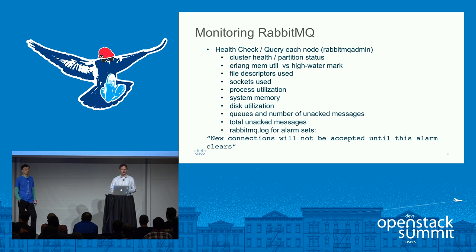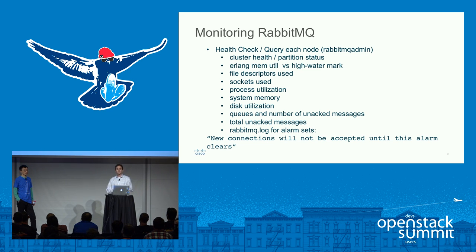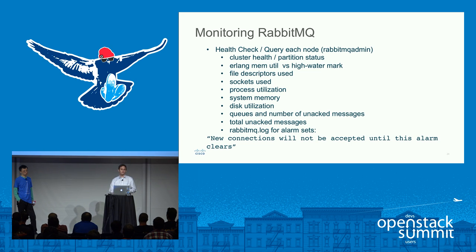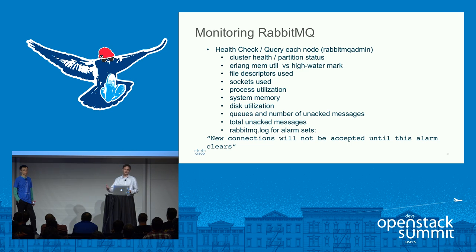On to monitoring RabbitMQ. We use RabbitMQ admin to monitor the health check, and we query each node for cluster health and partition status. Sometimes when a cluster gets partitioned, one node can think it's okay while the other two have a different view. When doing checks, make sure you set them up for all three nodes, not just one. Some of the things we measure are the Erlang memory utilization versus the high-water mark, number of file descriptors used, sockets used, process utilization, system memory, disk utilization, and the queues and number of unacked messages. Whenever messages are building up, set a threshold — if it's something greater than 20 or 30 messages, trigger an alarm, because messages backed up are always a sign of a problem.